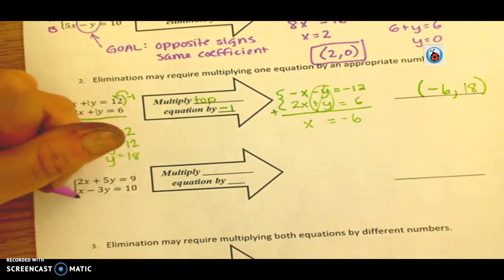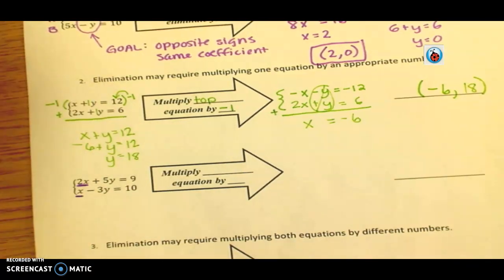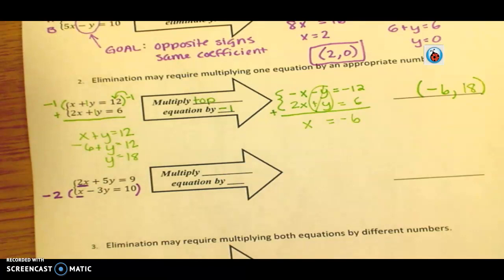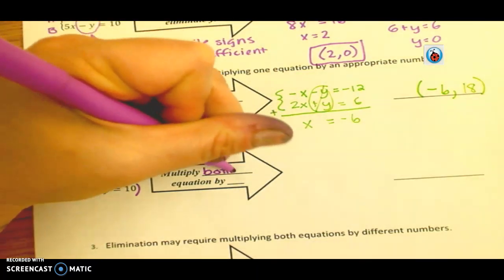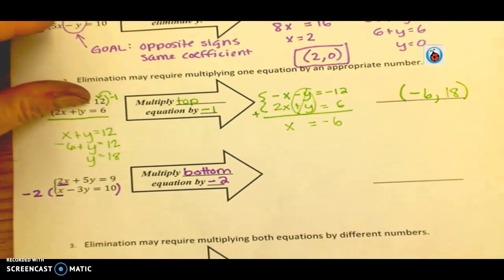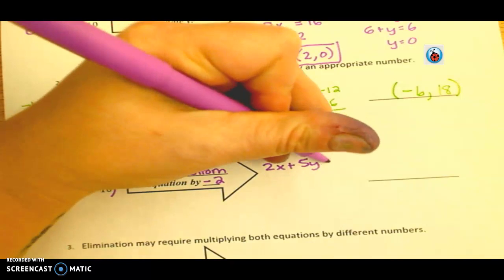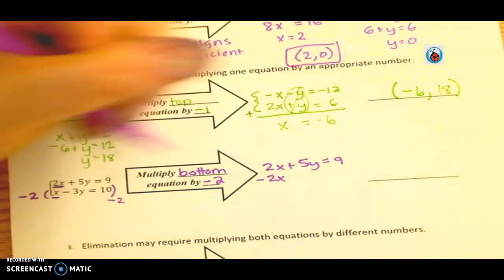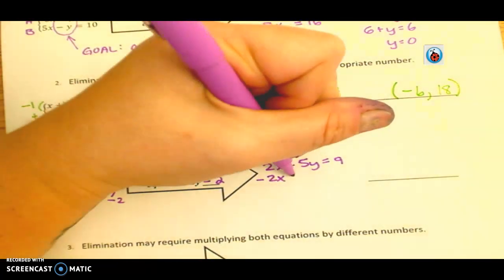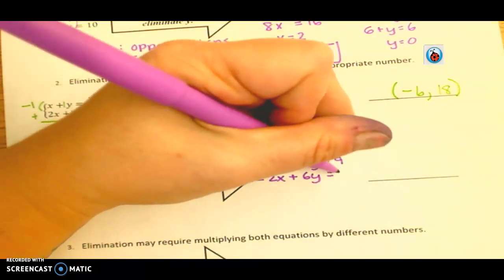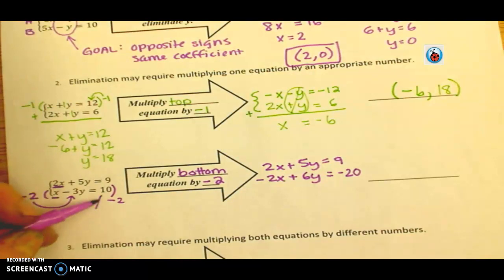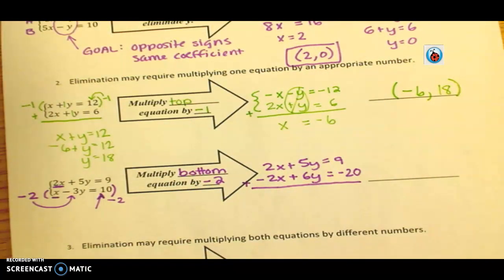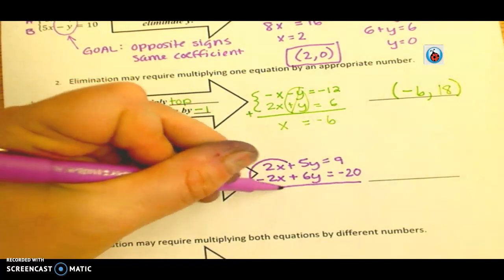Alright? So I don't know about you, but I saw the x's here. And I'm going to eliminate the x's. So I'm going to multiply the bottom equation by a negative 2. So nothing's going to happen to that top equation. 2x plus 5y equals 9. But I've got to multiply by a negative 2 to everything. Negative 2x. Negative 2 times a negative 3 is a positive 6y. And then don't forget the 10. It's going to become negative 20. That tends to be a common error. It's forgetting to multiply the other side by that same number. Alright, now we can go ahead and add them.